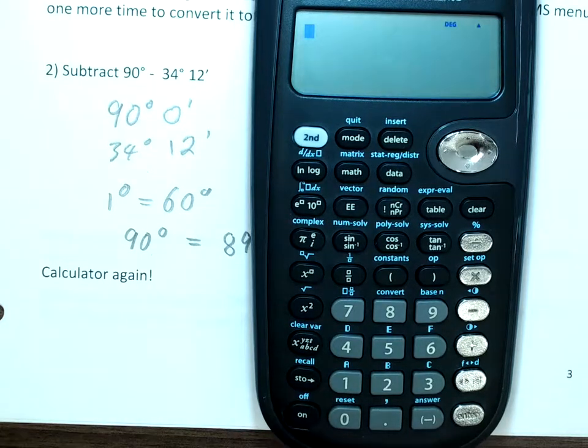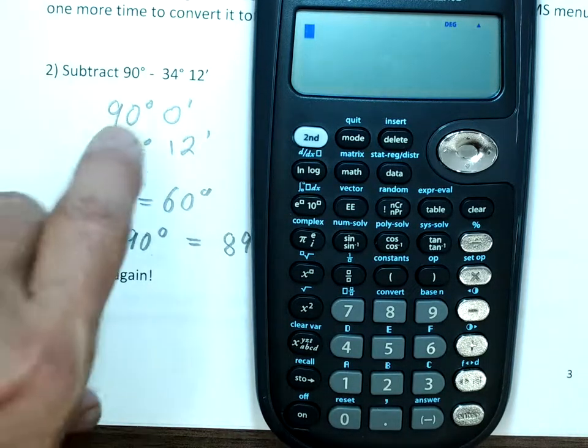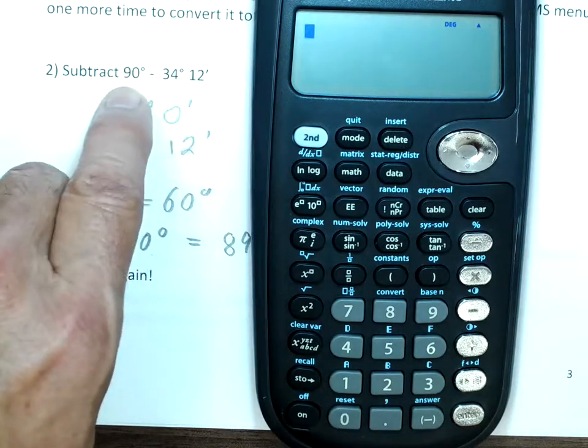All right, so turning my calculator on, again we're going to subtract 34 degrees 12 minutes from 90 degrees,